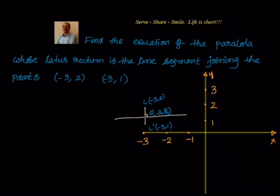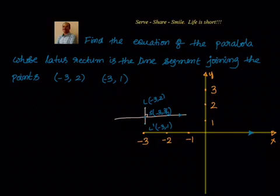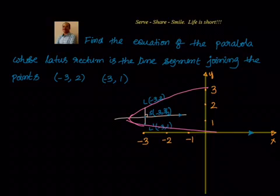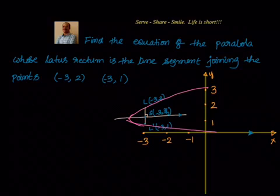Now with focus at (-3, 3/2), since the axis of the parabola is parallel to the x-axis, we can have two types of parabola: one parabola opening to the right side and another parabola opening to the left side. I will have one parabola opening to the right and another parabola opening to the left.